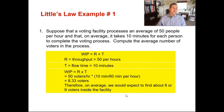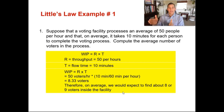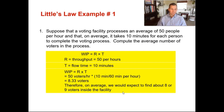Unless the answer choices show exactly 8.33, the answer would be something along the lines of 8 or 9 voters inside the facility — but both would not be correct simultaneously. It'll be 8.3 or between 8 and 9 people. So you've now solved Little's Law example number one: 8.33 voters are in this process at any given time.